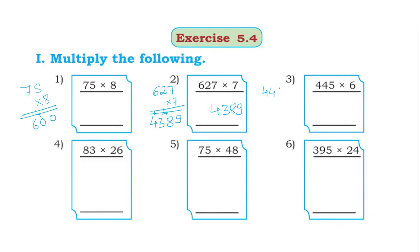445 into 6. 6 fives are 30, put 0, carry 3. 6 fours are 24, 24 plus 3, 27, 7 carry 2. 6 fours are 24, 24 plus 2, 26. 2,670 is the answer.